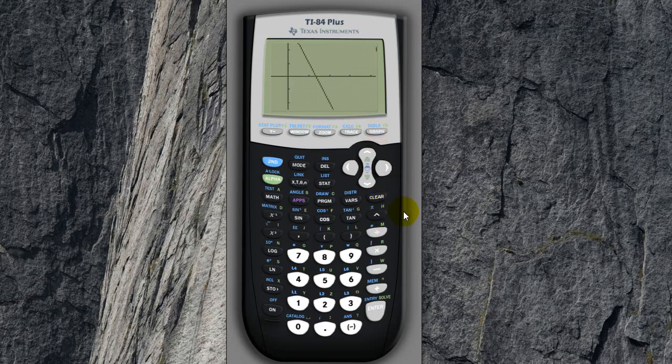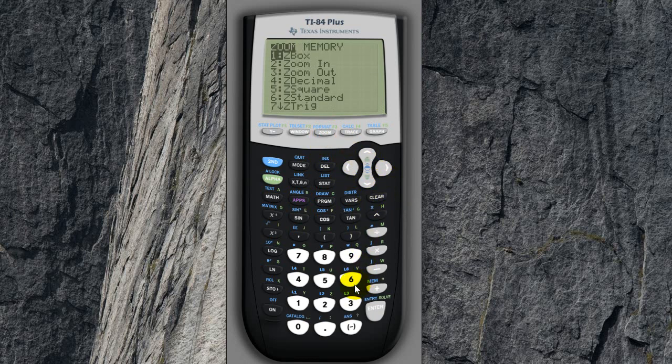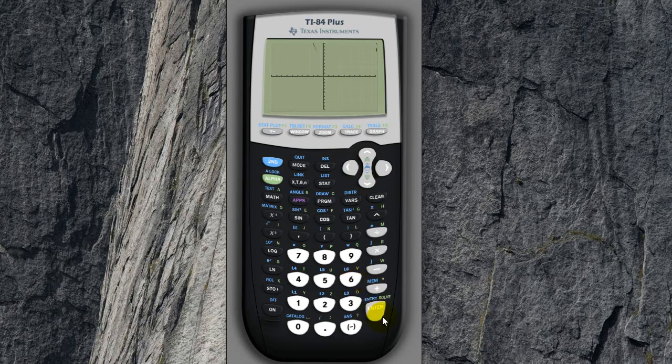And you can see, well, we can't really see it. So let's go back to zoom standard number 6. And we should be able to see that the parabola intersects with the straight line twice.